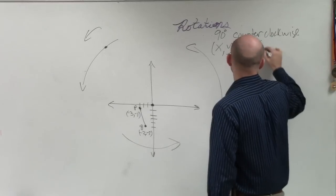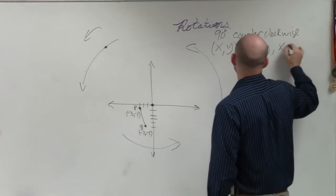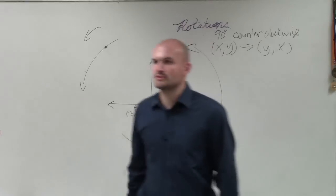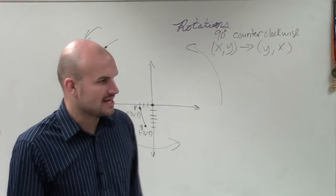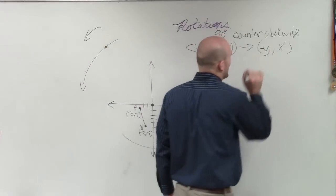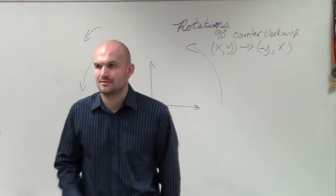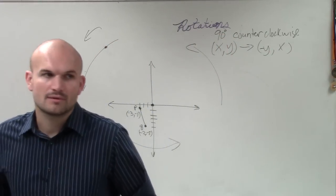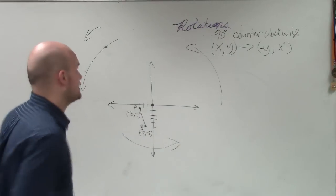Then what I'm going to do is I'm going to swap the y and the x, kind of like when we reflected the y equals x line. But then I'm going to now make the y negative. So let's go and take a look at how we can do this.